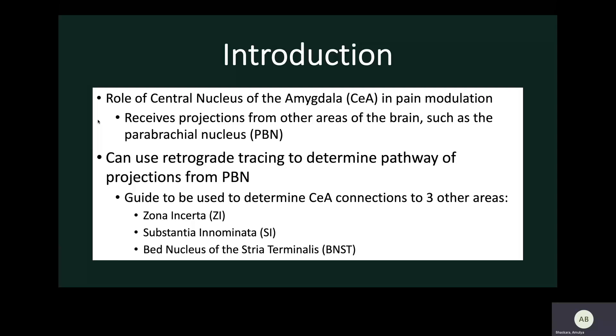The CEA, in order to do this, receives projections from many different areas of the brain. One of those areas is the parabrachial nucleus, or the PBN, which sends a lot of sensory information to all different parts of the brain.